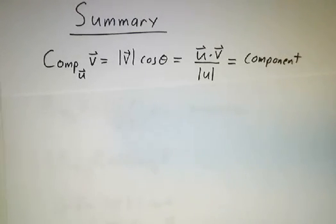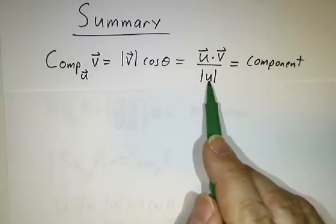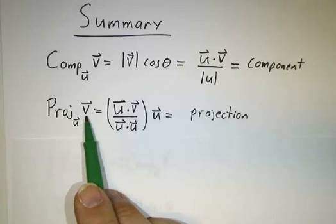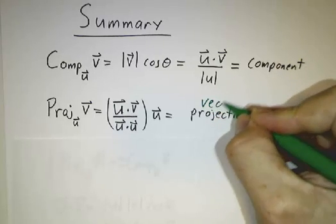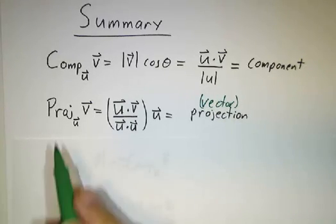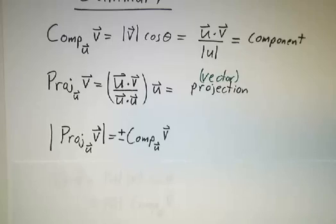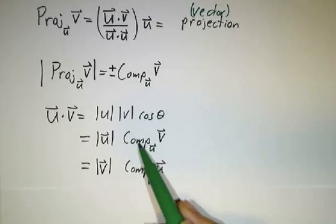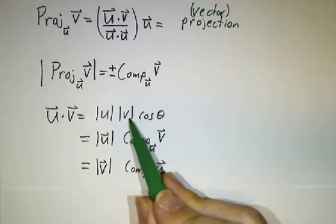To sum up: the component or scalar projection is |v| cos theta, and you get that by taking the dot product and dividing by the length of u. The vector projection proj_u(v) is the portion of the v vector in the u direction, and the length of proj_u(v) is plus or minus comp_u(v). The dot product can be written in terms of either the component of v in the u direction, or the component of u in the v direction, or simply as |u||v| cos theta.